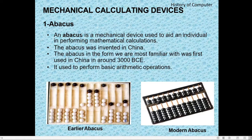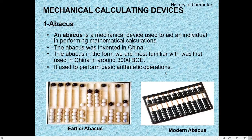Mechanical Calculating Devices. The first is the Abacus, a fast counting device. An Abacus is a mechanical device used to aid an individual in performing mathematical calculations. Abacus was invented in China, and the form we are most familiar with was first used around 3000 BCE. It was used to perform basic arithmetic operations; only addition and subtraction could be done using the Abacus. Here you can see the earlier Abacus picture on the left and the modern Abacus picture on the right.